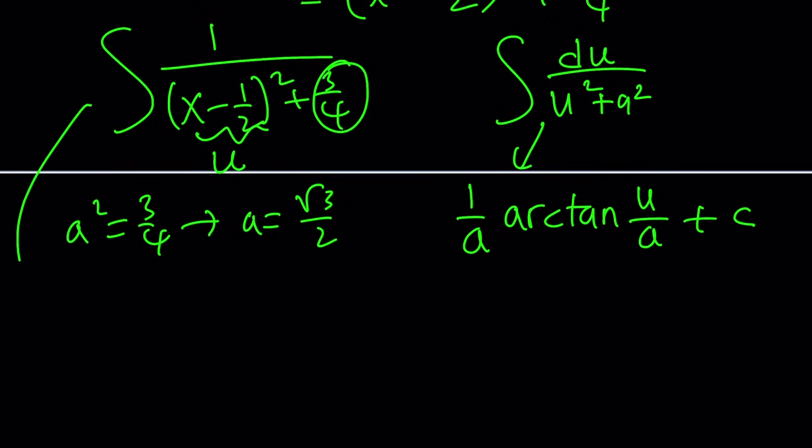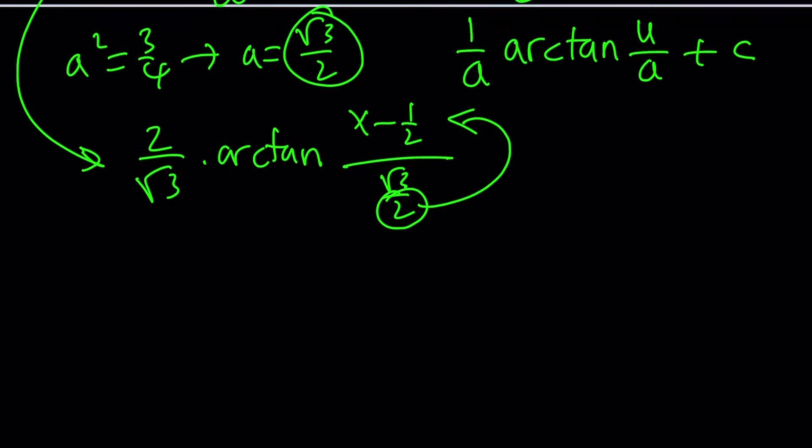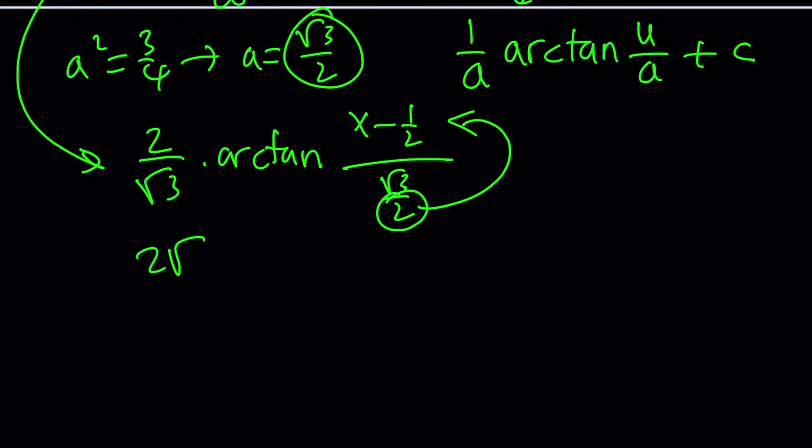So this integral is going to be one over this, which is two over root three times arctangent u, which is x minus one half divided by a, which is root three over two. Of course, you can kind of put the two in the denominator, in the numerator, just flip it, okay? You know what I'm talking about, right? So this will become, and if I rationalize the denominator, I have to do that, times arctan two x minus one divided by root three and then plus the constant.